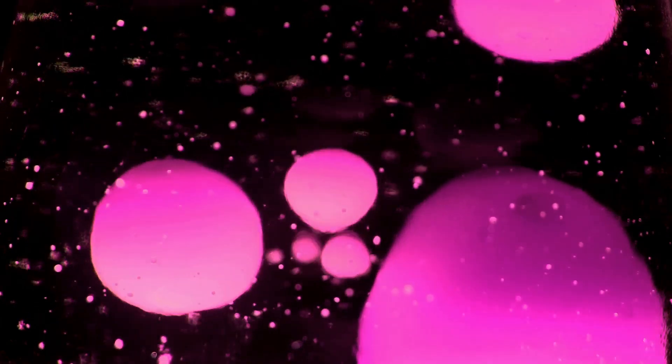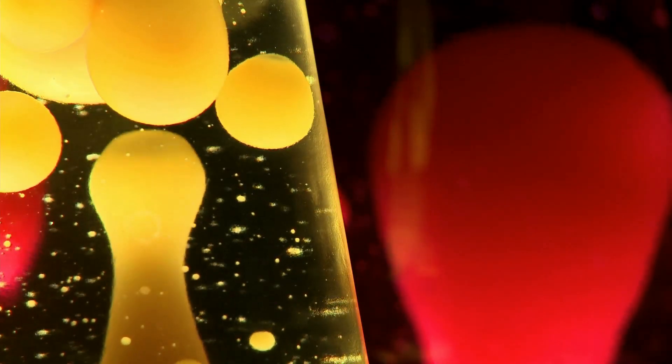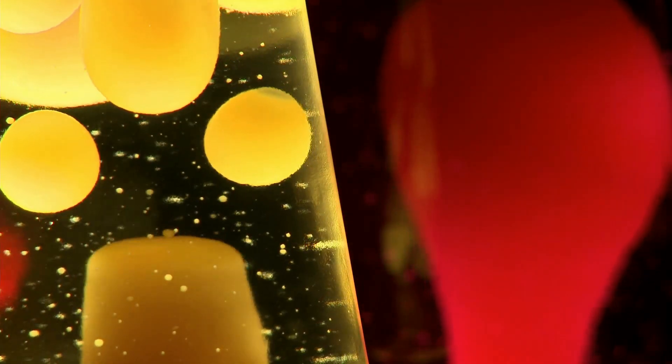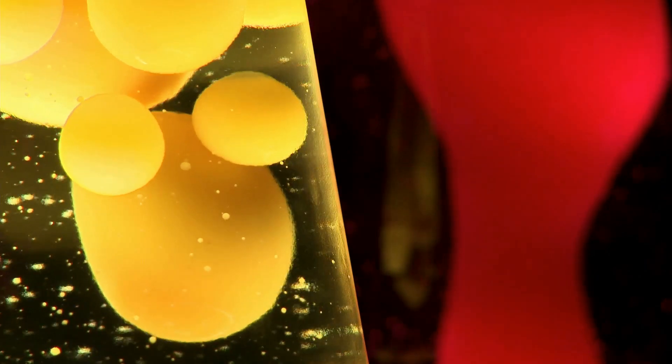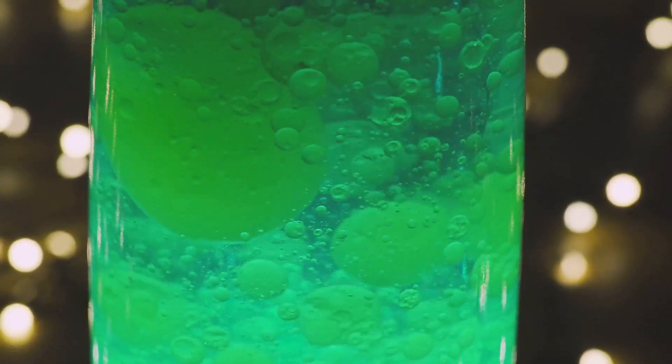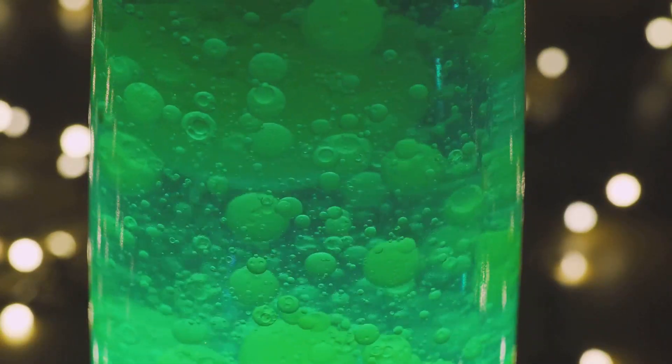But when we flip the switch, the heating element warms up the wax. This is where the transformation starts. As the wax heats up, it expands and becomes less dense than the surrounding liquid. This change in density is crucial. This causes the wax to rise to the top of the lamp. The once solid blob now floats gracefully upwards.